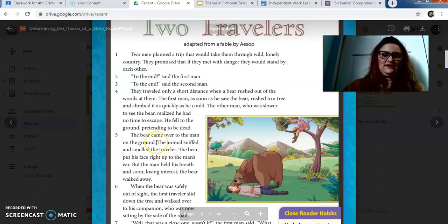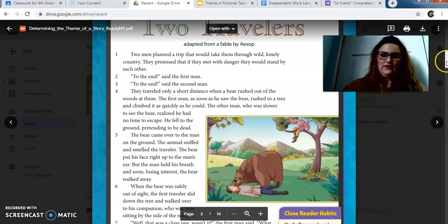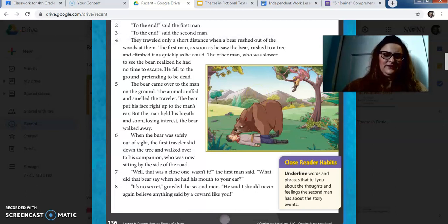The bear came over to the man on the ground. The animal sniffed and smelled the traveler. The bear put his face right up to the man's ear. But the man held his breath and soon, losing interest, the bear walked away. When the bear was safely out of sight, the first traveler slid down the tree and walked over to his companion, who was now sitting by the side of the road. Well, that was a close one, wasn't it? The first man said. What did that bear say when he had his mouth to your ear? It's no secret, growled the second man. He said I should never again believe anything said by a coward like you.